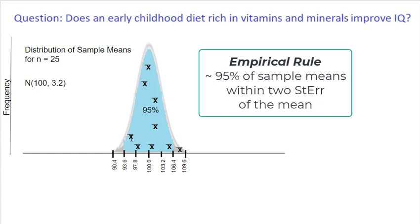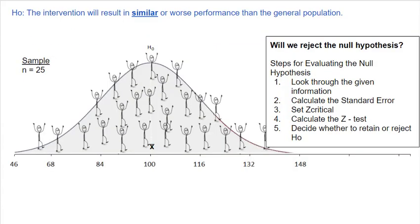So getting a sample mean in this range isn't particularly exciting — it's not particularly unusual. If it were more extreme, then it might get our attention. So here are our 25 participants again, with a sample mean of 100.7.